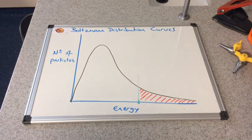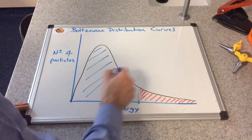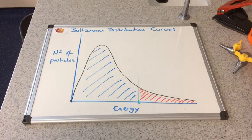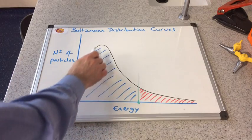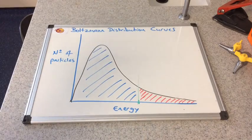So this large area here, all of these particles, yes they're colliding, but they don't have enough energy. So these don't react, these are all the unsuccessful collisions, and these are all the successful collisions.